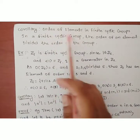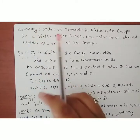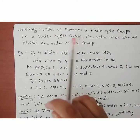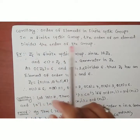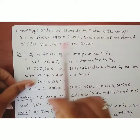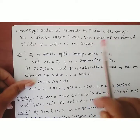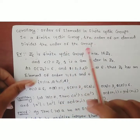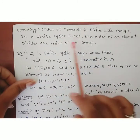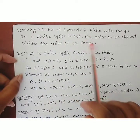Our next corollary is about the order of an element in a finite cyclic group. The statement is: in a finite cyclic group, the order of every element divides the order of the group. The proof is not given in the book — only the statement is given. This is a very useful corollary by which we solve different examples.